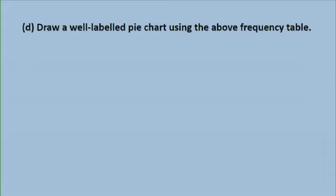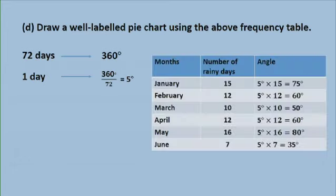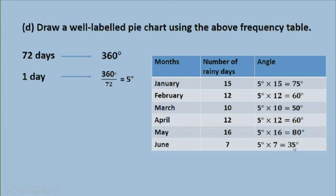For Part D, I need to draw a pie chart representing the frequency table. In all, I have 72 days. So 72 days will represent 360 degrees, meaning one day represents 360 over 72, that is 5 degrees. January: 5 times 15 = 75 degrees. February: 5 times 12 = 60 degrees. March: 5 times 10 = 50 degrees. April: 5 times 12 = 60 degrees. May: 5 times 16 = 80 degrees. June: 5 times 7 = 35 degrees. Remember, you can check whether all these add up to 360 degrees.